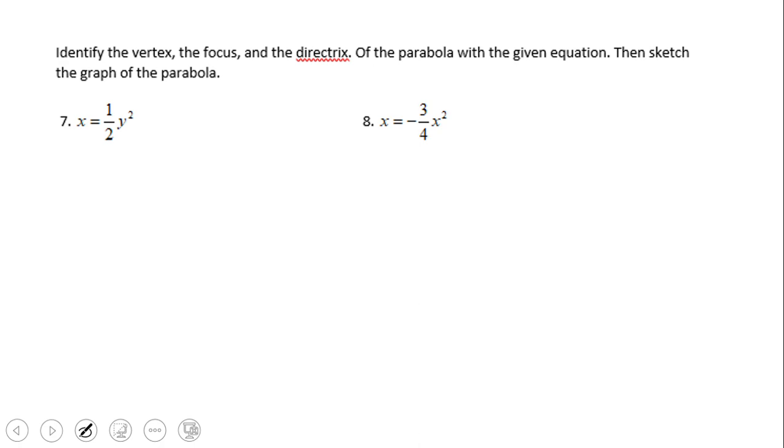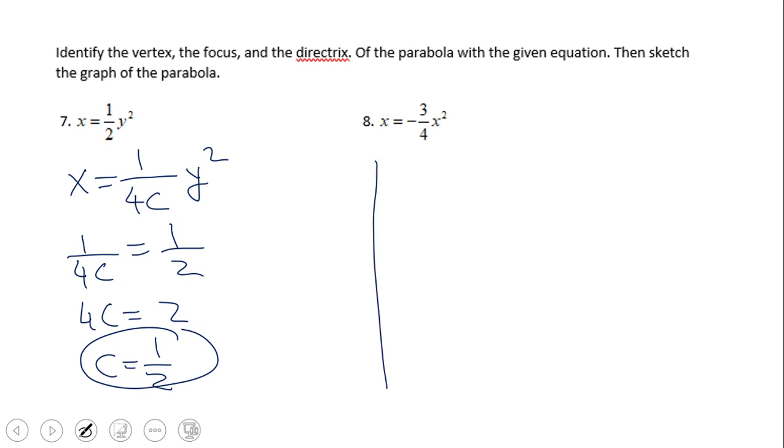So how we're going to handle this equation? Similar to what we did before: x equals one over 4c times y². Again we're going to match one over 4c with one half, and we get an equation now in c. So we're going to have 4c equals 2, or c equals one half.